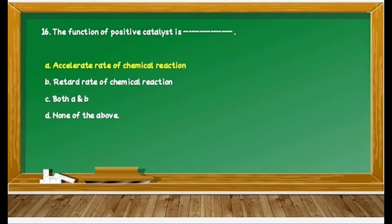Question 36: The function of positive catalyst is dash dash. Option A is to accelerate the rate of chemical reaction. We know that the positive catalyst increases the rate of chemical reaction. Therefore, option A, the first option, is correct.